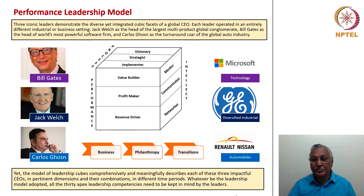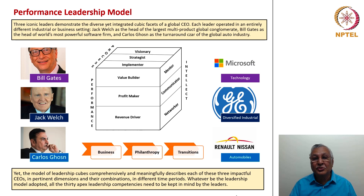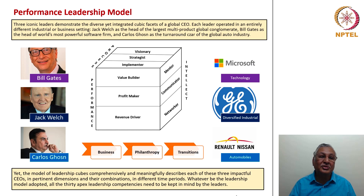This is the cubic model being referred to. On the vertical axis is the performance dimension — at the foundational level the CEO would be a revenue driver, then a profit maker, then finally a value driver. The other two axes are the intellect dimension and the process dimension. Under process you have the ability to visualize, strategize and implement. On the intellect dimension you have the ability to mentor, communicate and network. The three iconic leaders demonstrate the diverse yet integrated cubic facets of a global CEO.